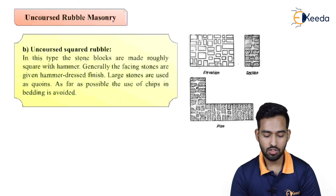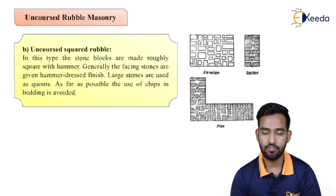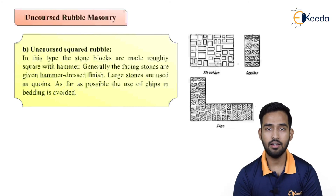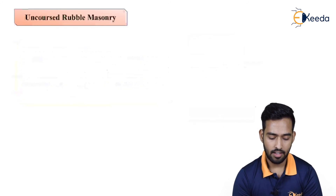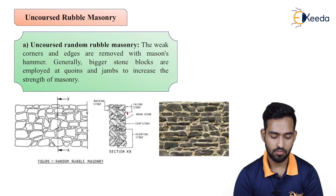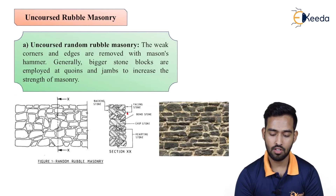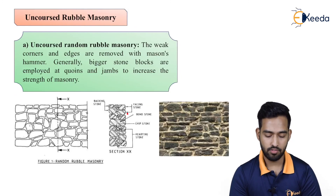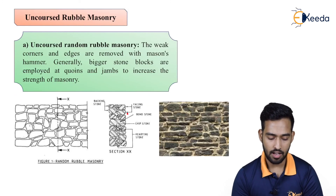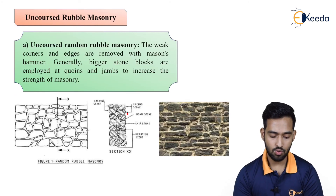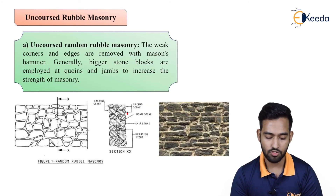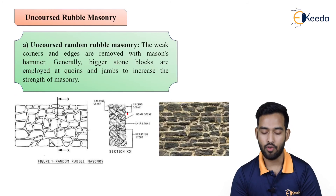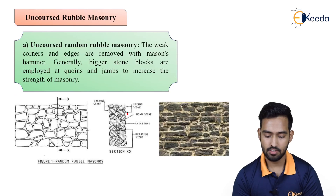Talking about uncoursed square rubble, as you can see the difference between the two figures — these are generally in proper manner and have a more defined shape. In this figure the shapes are of irregular size, but in the square rubble figure you can see sharp edges. In this type the stone blocks are made roughly square with a hammer. Generally the facing stones are given a hammer dress finish. Large stones are used as quoins. As far as possible, the use of chips in bedding is avoided, which gives a better look.